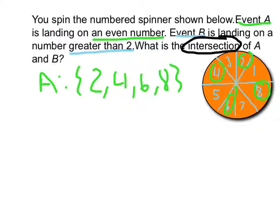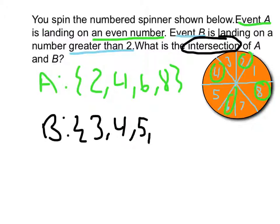And then set B is numbers that are greater than 2. So it's 3, 4, 5, 6, 7, and 8. And so this is what a set is. It's basically the numbers in between these brackets right here on both of them.